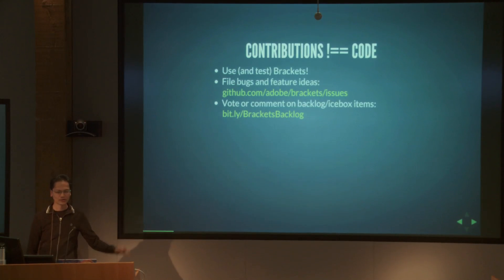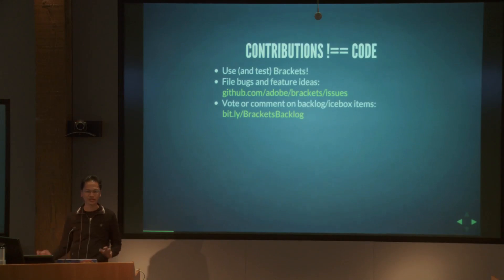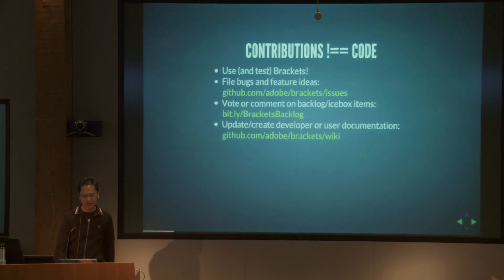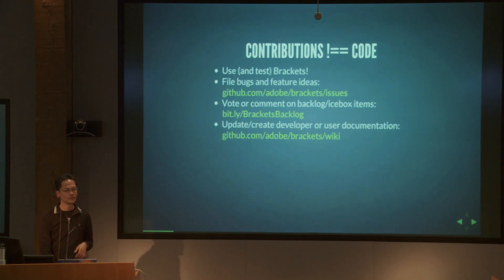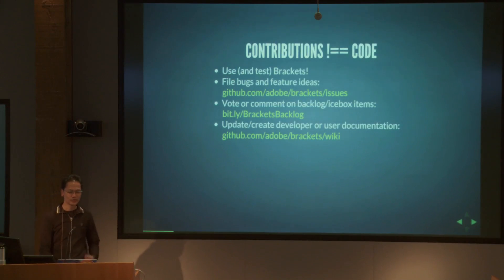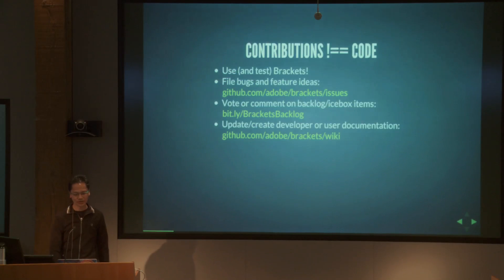You can go to the Trello backlog and vote or comment on items there. Right now it's not super clean — we moved it from an internal Scrum tool, so it's a little hard to read, but we'll be cleaning that up over time. It's also very helpful if you run into problems and there's a question our existing documentation doesn't address, or if you have ideas for how we could document things. We don't have much documentation right now, so it would be great to start putting things up on the Wiki.